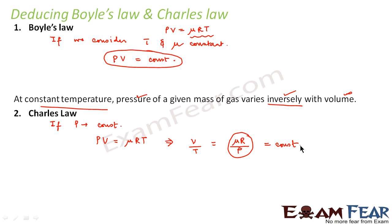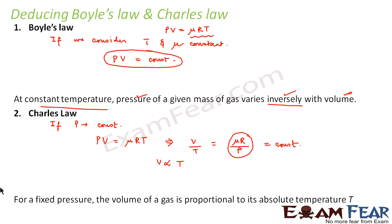That means at constant pressure, volume varies directly with temperature. And that is Charles' law. So in this case, we find that volume is directly proportional to temperature. For a fixed pressure, the volume of a gas is proportional to its absolute temperature. And that is the statement of Charles' law.